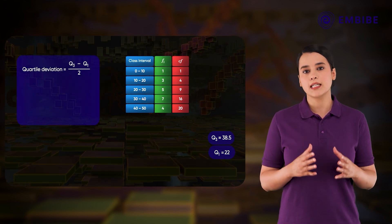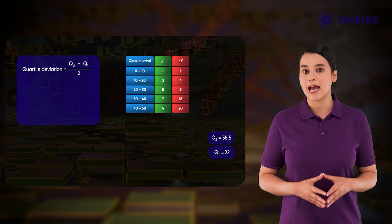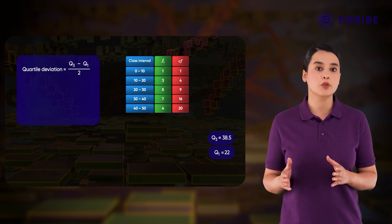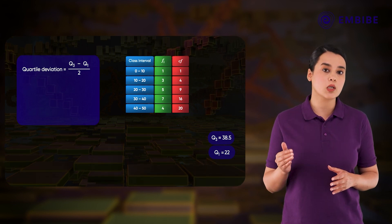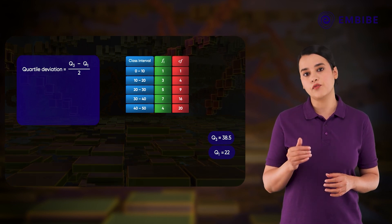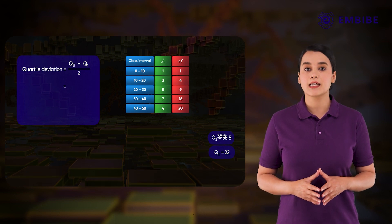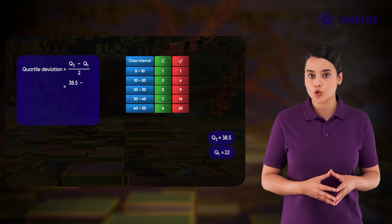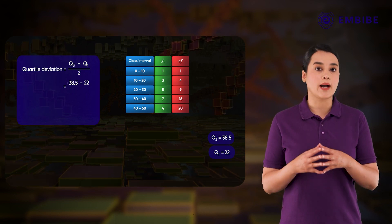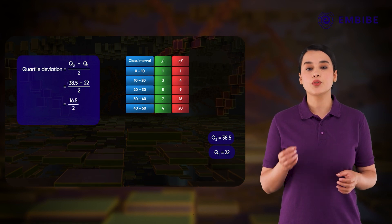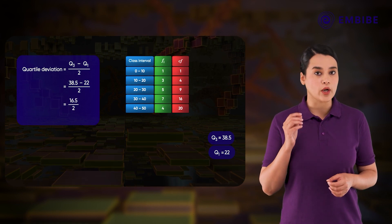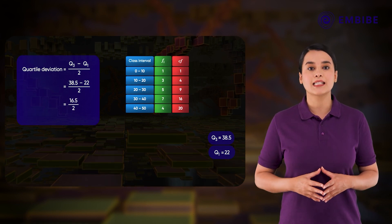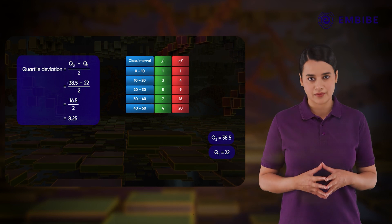The quartile deviation is half the difference between Q3 and Q1, that is (38.5 minus 22) divided by 2, which equals 16.5 divided by 2, giving a quartile deviation of 8.25.